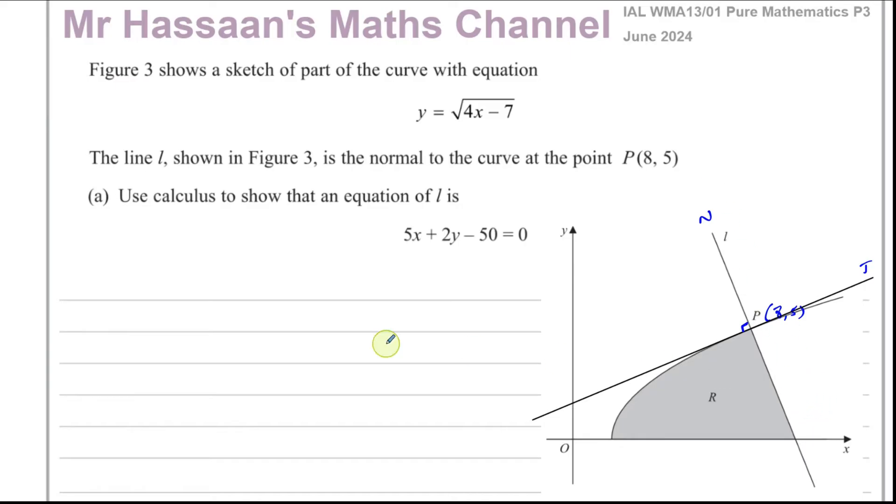The equation of a straight line can be found by using two pieces of information we need. If we get those two pieces of information, we can find the equation of that straight line. One of the parts that we need is we need to know a point on the line which we have, which is (8, 5). And the second thing we need to know is the gradient. So we need to have the gradient of line L. Now to find the gradient, what we need to do is we need to find the gradient at P. The gradient of the curve at P and the gradient of the line L will be related to each other because they're negative reciprocals. So I need to find the gradient at P.